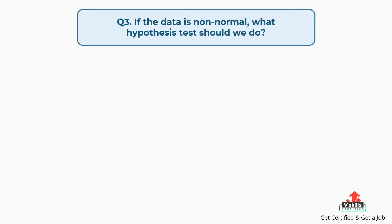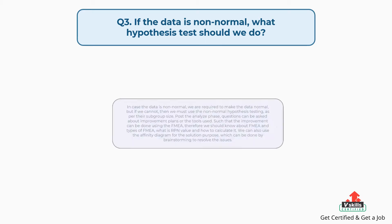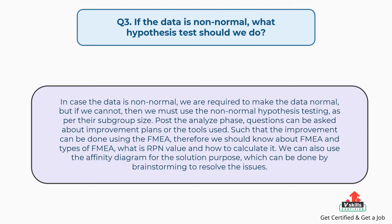Question number three: If the data is non-normal, what hypothesis test should we do? In case the data is non-normal, we are required to make the data normal, but if we cannot, then we must use the non-normal hypothesis testing as per their subgroup size. Post the analysis phase, questions can be asked about improvement plans or the tools used, such as failure modes and effects analysis (FMEA), types of FMEA, risk priority number value and how to calculate it. We can also use the affinity diagram for solution purposes, which can be done by brainstorming to resolve the issues.